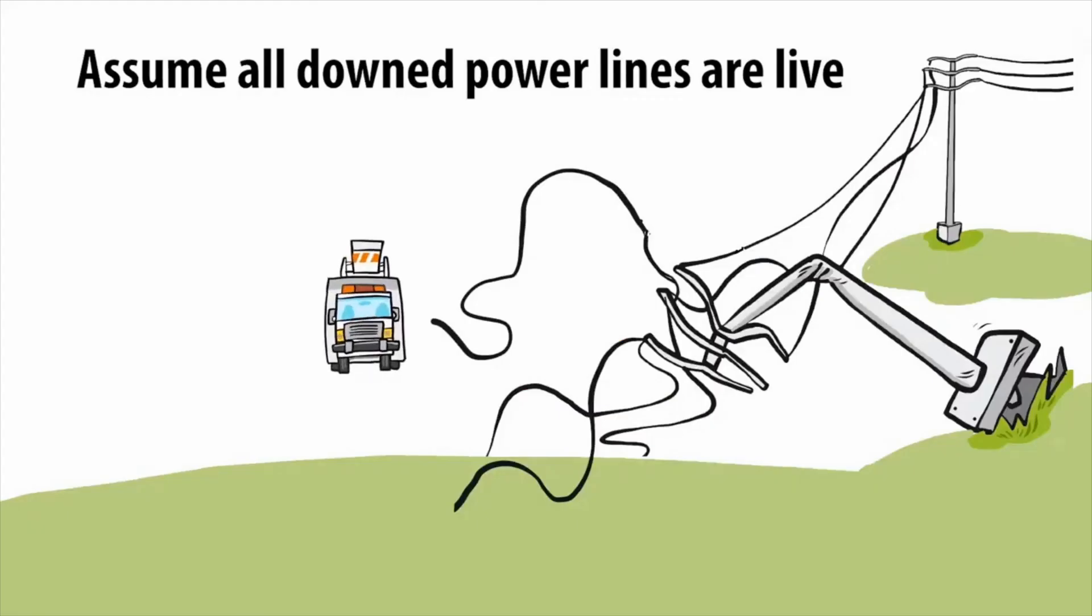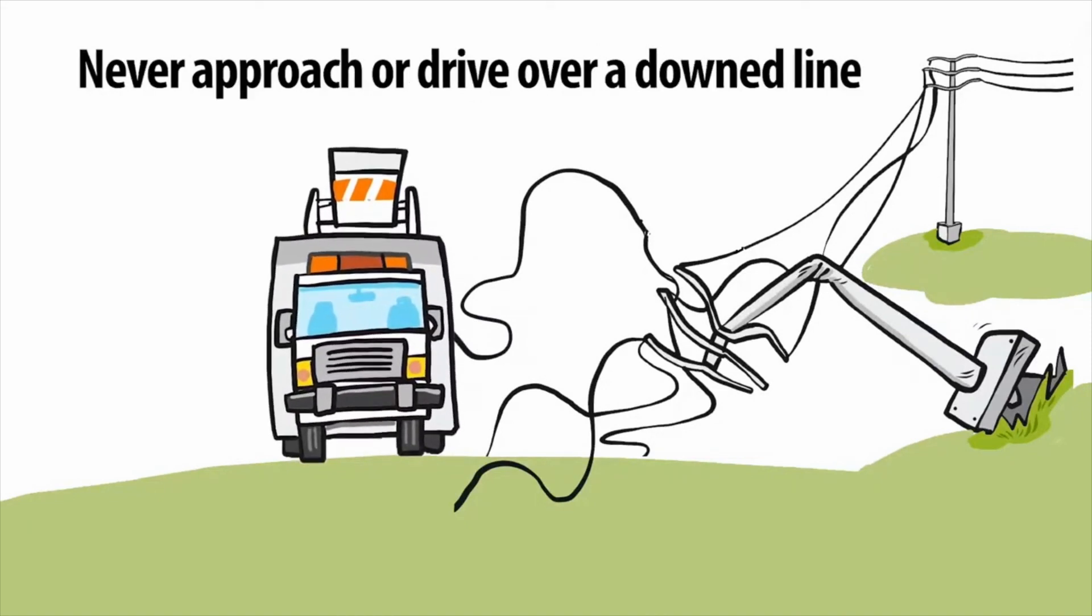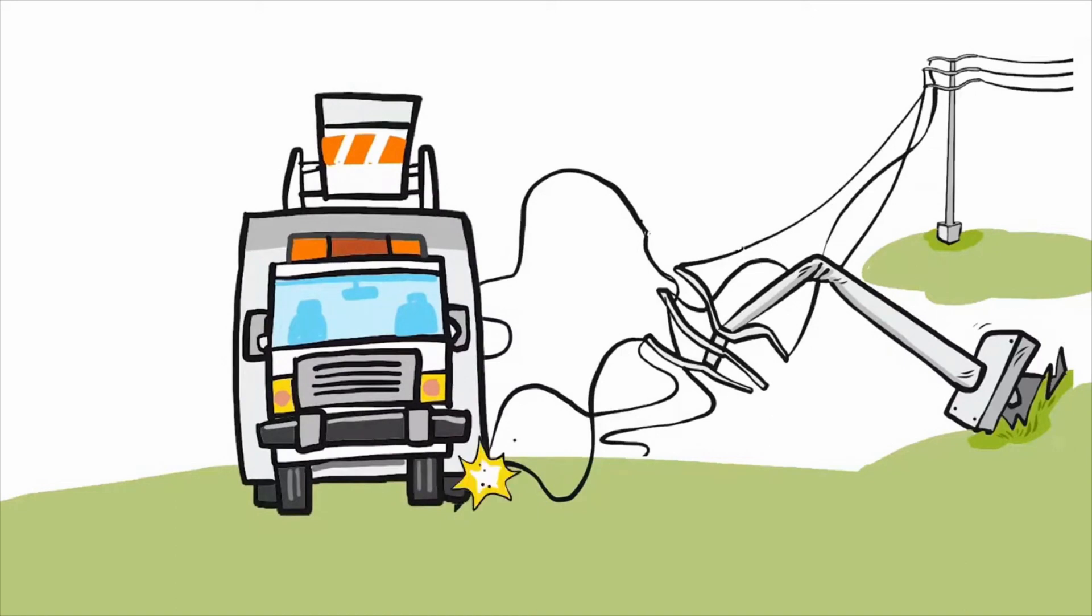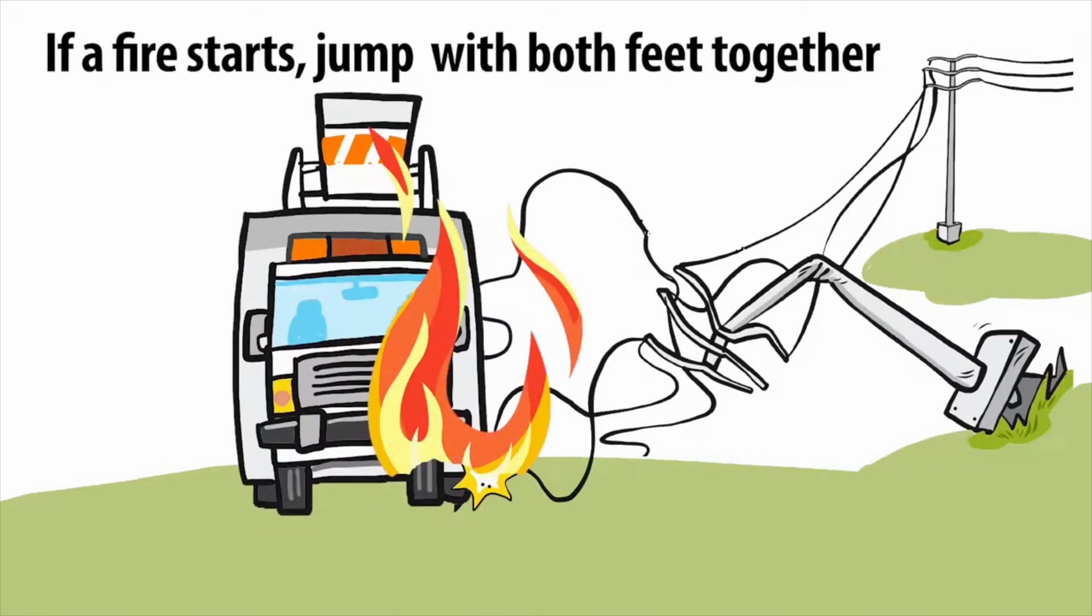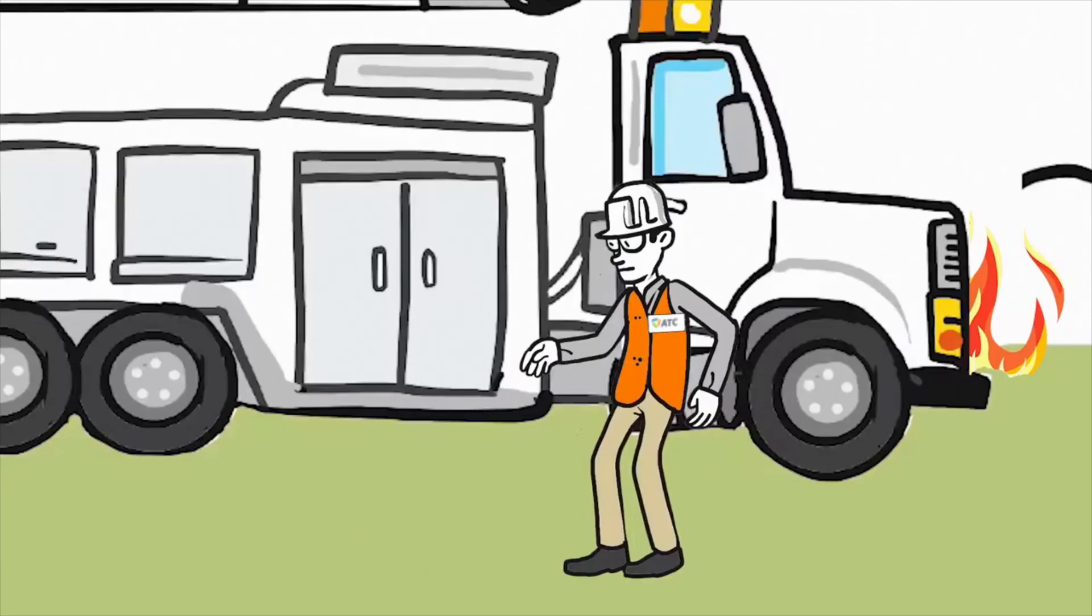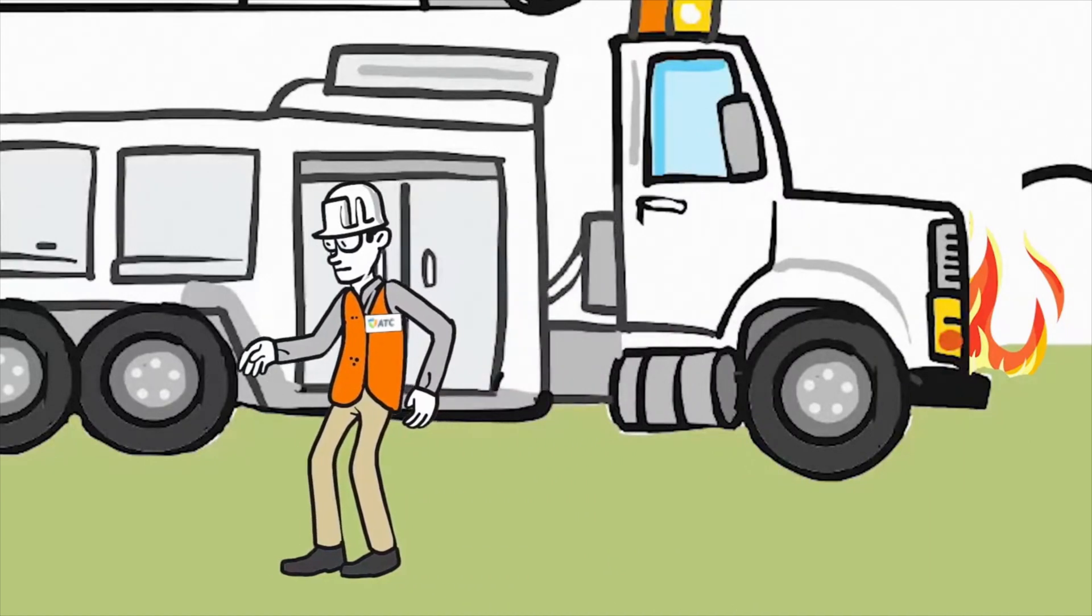Always assume all downed power lines are live and a hazard. Never approach or drive over a downed line. If your vehicle does contact a downed line, stay in the vehicle. If a fire starts, don't step out. Jump with both feet together, then shuffle away with feet together. Remember the step potential.